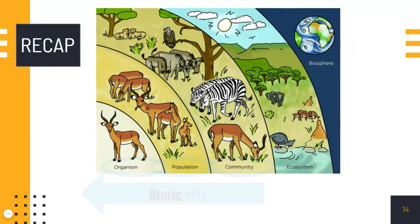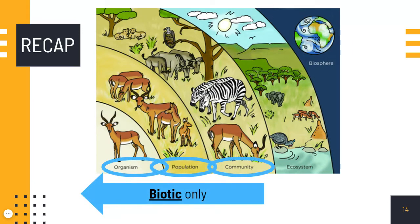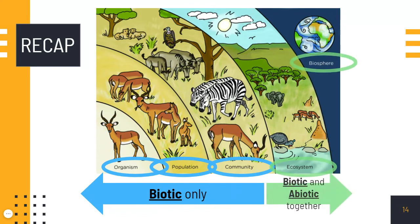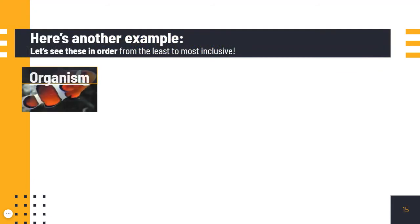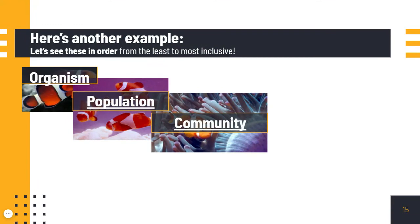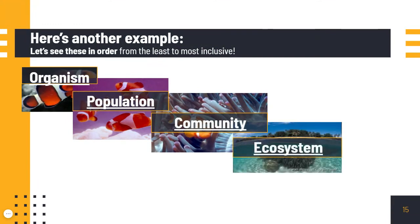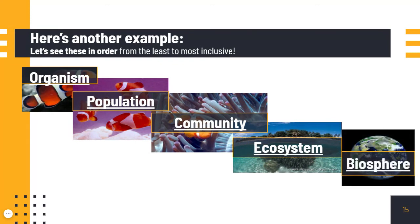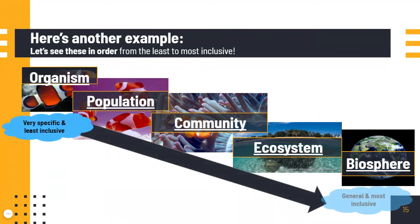To recap: our biotic factors include our organisms, populations, and communities. Our biotic and abiotic together would include ecosystems and the biosphere. An organism is just one. A group of organisms is a population. A group of populations makes a community. Many communities make an ecosystem. And all our ecosystems together make up a biosphere.